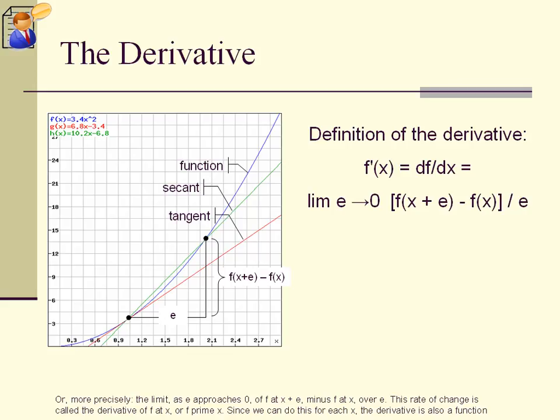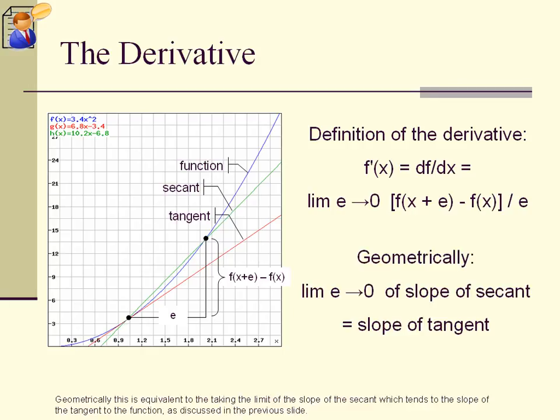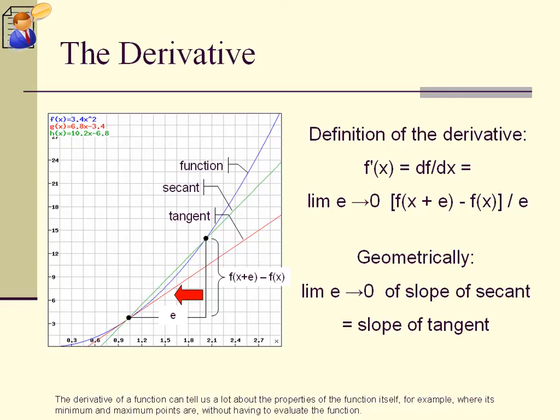Geometrically this is equivalent to taking the limit of the slope of the secant which tends to the slope of the tangent to the function, as discussed in the previous slide. The derivative of a function can tell us a lot about the properties of the function itself, for example, where its minimum and maximum points are, without having to evaluate the function.